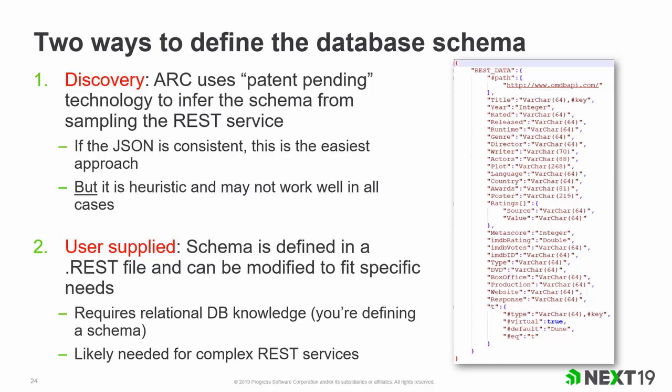Discovery is the process of inferring data types from the response payload — a heuristic, best-guess process that is actually pretty reliable. But with very complex schemas it might not be sufficient, so we also offer a user-supplied schema. You can run discovery in Corticon — ARC identifies each field as decimal, string, or whatever — export that schema file, edit it, and re-import it. It will be added to the vocabulary and used at runtime. You have a lot of control over this, which is a huge benefit.